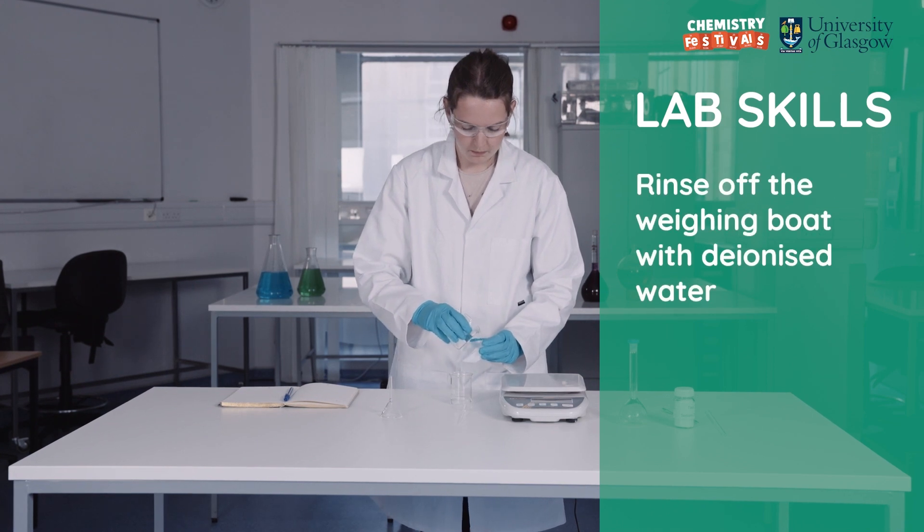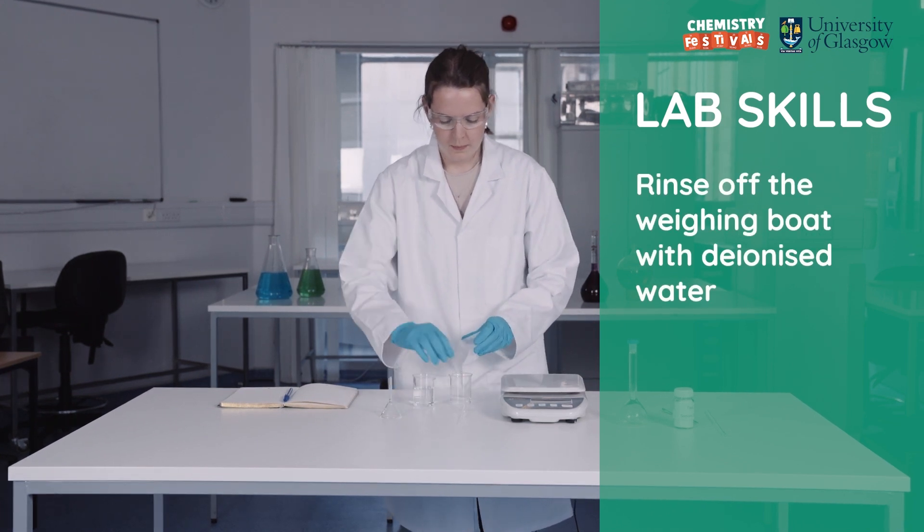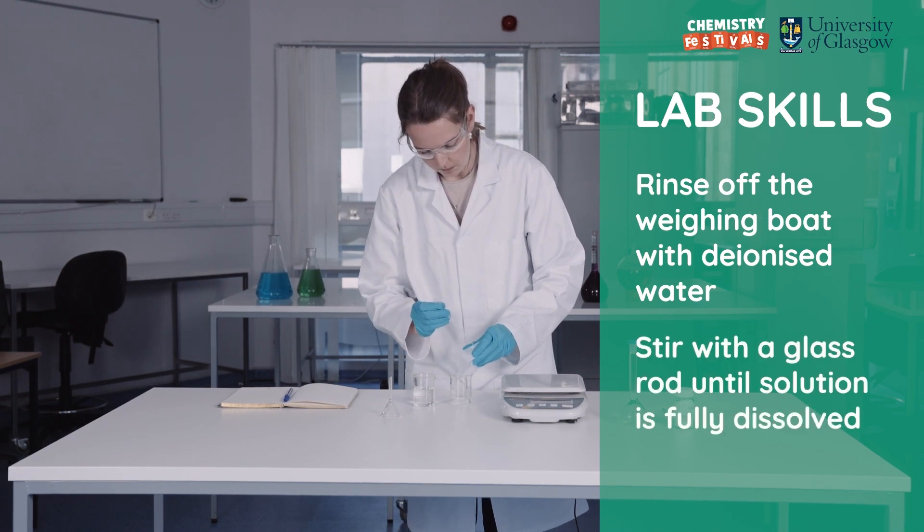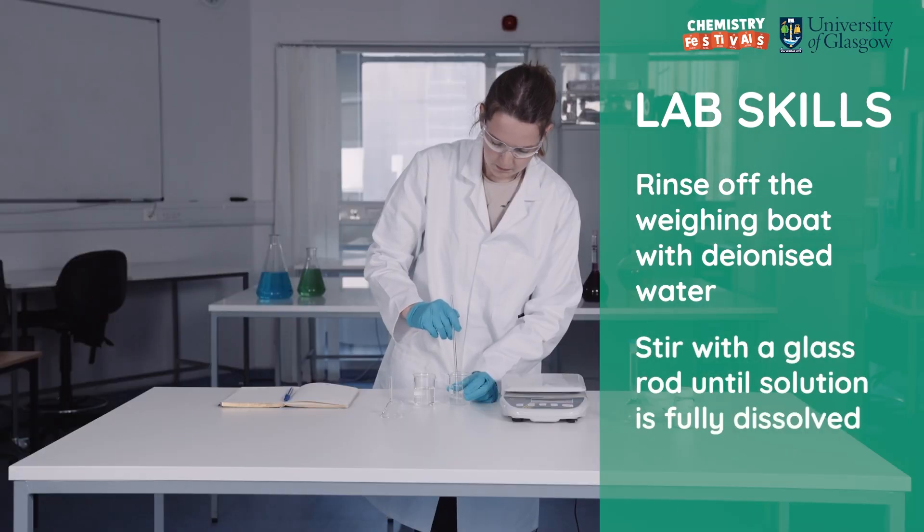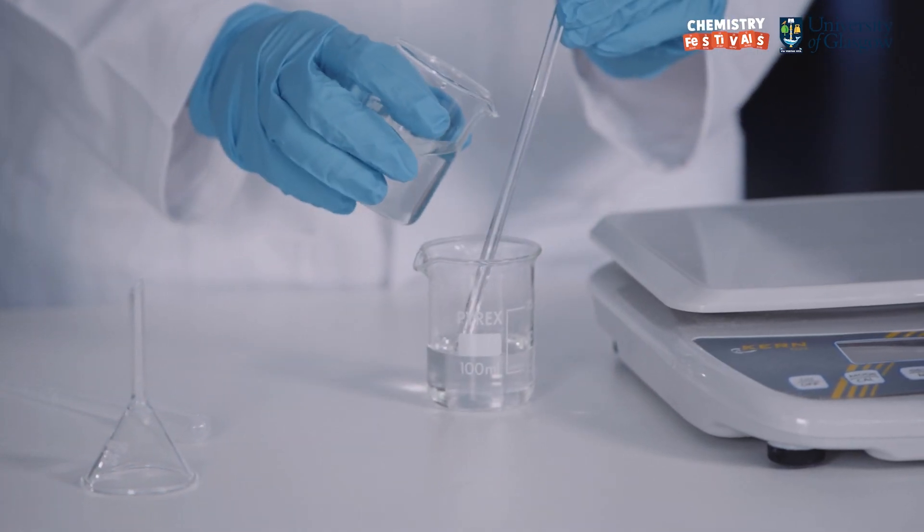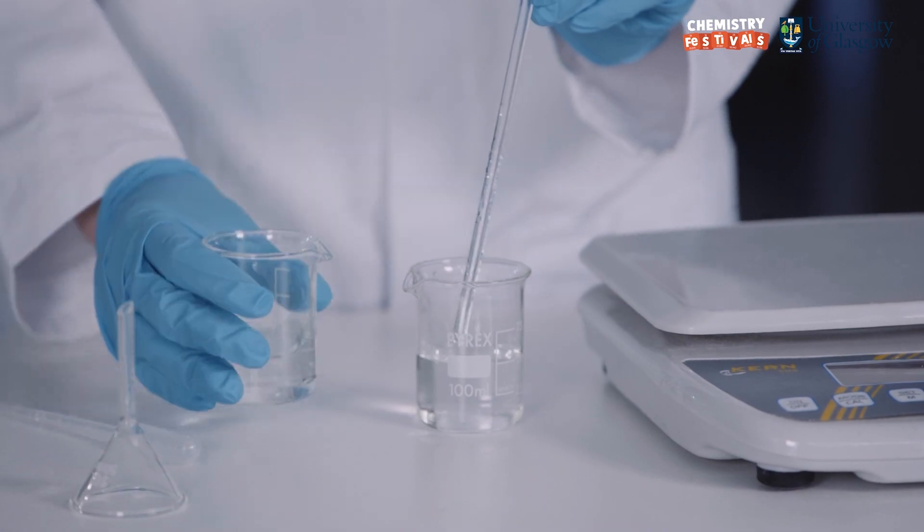Next I rinse off the weighing boat with deionized water. I add more deionized water and stir it with a glass rod until it is fully dissolved. If your chemical doesn't fully dissolve you may need to add some more water. Make sure to rinse off any excess chemical from the glass rod.